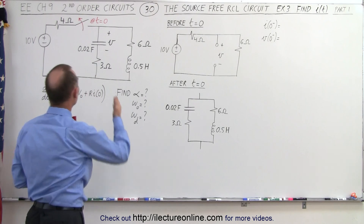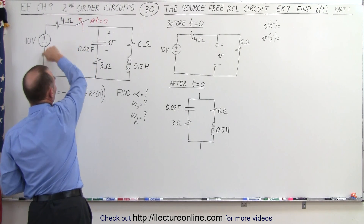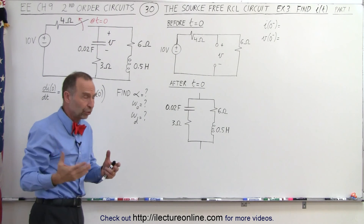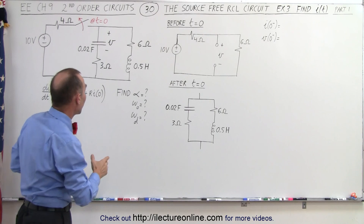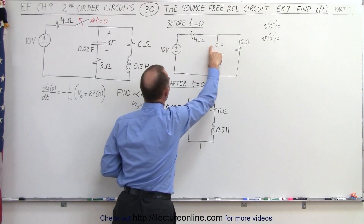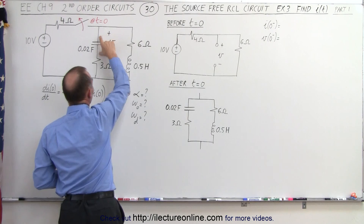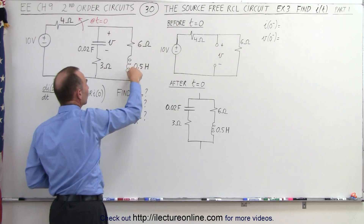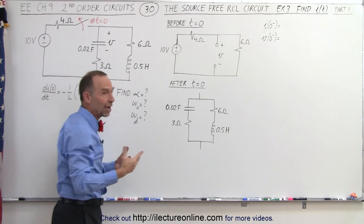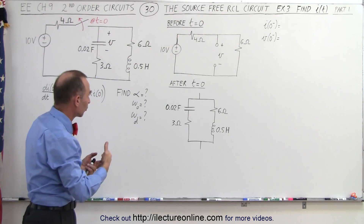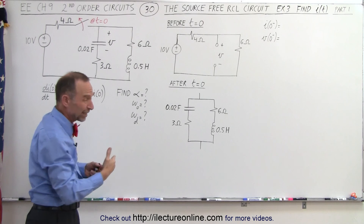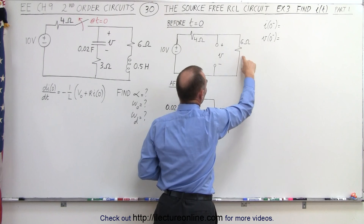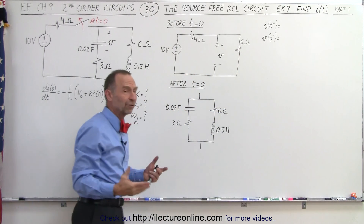Before time equals 0, the switch is closed and current is flowing through the circuit. Notice there's a capacitor here, and the capacitor acts like an open circuit after a certain amount of time has passed, so this branch will be represented by an open circuit, and the voltage across the capacitor will be the voltage across that open circuit. On the other branch, we have an inductor, but after time has gone by, inductors will not oppose any current — only changes in current — so the right branch becomes simply a single resistor, and the inductor is replaced by a short.